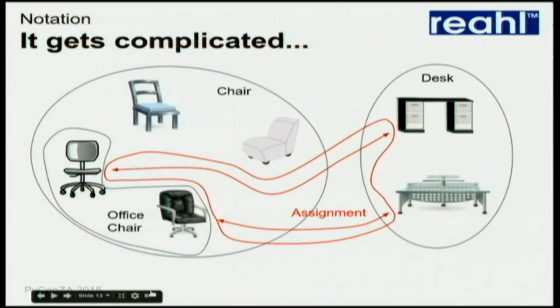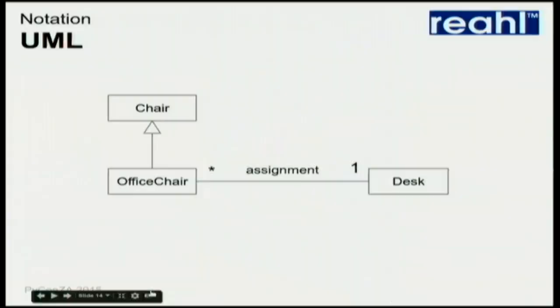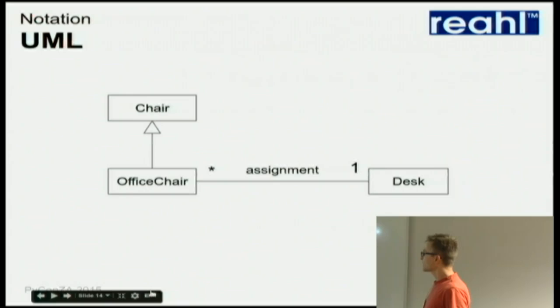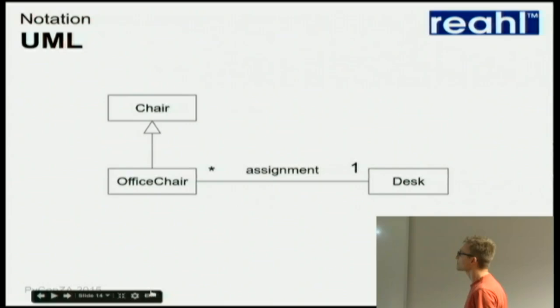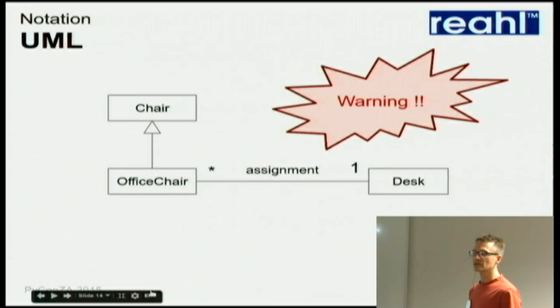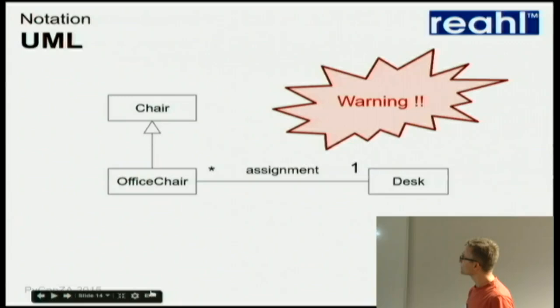If you carry on with Venn diagrams, things get a bit complicated. So for this reason people came up with a lot of different notations and finally standardized on something called UML in the 90s. This then says exactly the same thing: we conceptually have a thing called a chair. Office chairs are chairs — they're a little bit different because we can say more stuff about them, for example that they can be assigned to desks and exactly how the multiplicity works. I personally have the opinion that you should be warned if you use UML and go read that book, because the notation has a lot of details that I feel really defeat the purpose. I prefer to stick to simple bits of the notation.